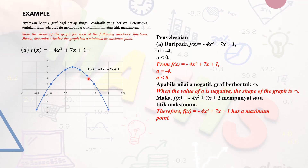Now moving to the next example: they ask us to state the shape of the graph for each of the following quadratic functions. Part A has negative 4x squared, so the coefficient of x squared is −4, meaning a = −4, b = 7, and c = 1. Since 'a' is negative, the curve appears to be a sad face with a maximum point lying on the right-hand side of the y-axis.